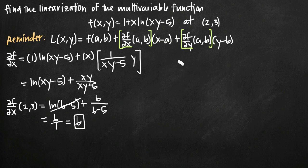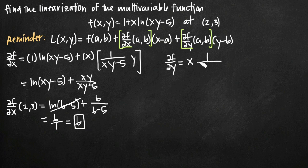Now, taking the partial derivative of f with respect to y of the same function: again, the derivative of 1 is 0. The derivative of x times natural log of (xy - 5) — we don't need product rule here because we're treating x as a constant. So we apply chain rule: x times 1 over (xy - 5), then multiply by the derivative of the inside function with respect to y, which is just x. When we simplify, we get x² over (xy - 5).